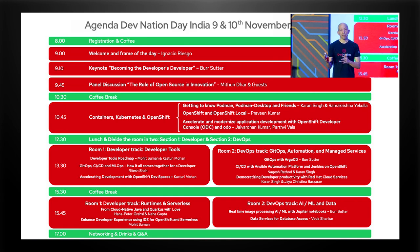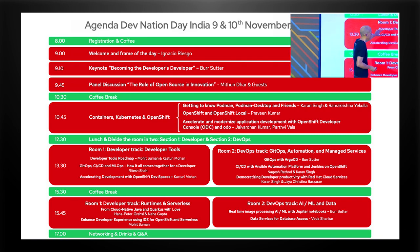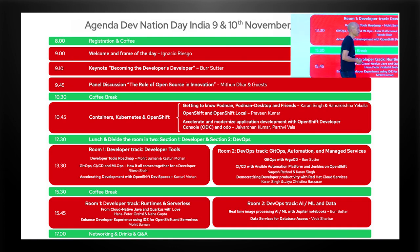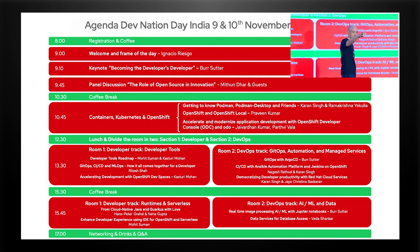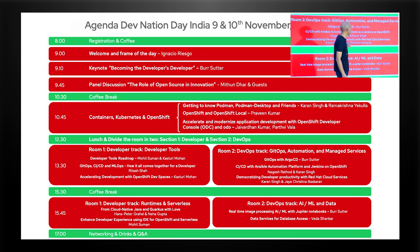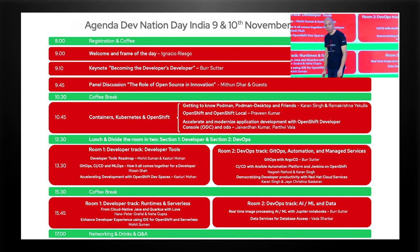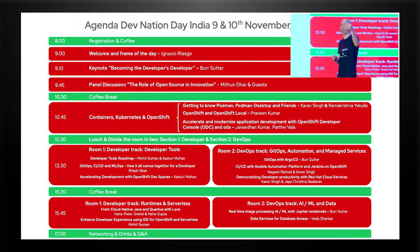We have so much content that after lunch we will divide the room into two tracks. In this first part of the room, this is the developer track — we will go through all the critical developer tools. In that other part of the room, you can see there is another stage exactly like this one, and we will go through the other track, which will put more focus on operations.